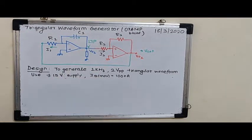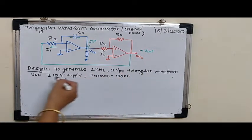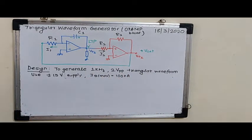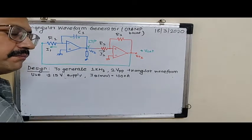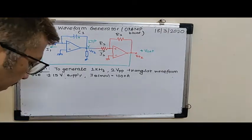So we are supposed to generate 1 kHz, 2Vp-p triangular waveform. Remember 2V peak to peak means minus 2 to plus 2. You have to use a supply of plus minus 15 volts and as usual we start with having the maximum bias current of the operational amplifier at 100 nA.